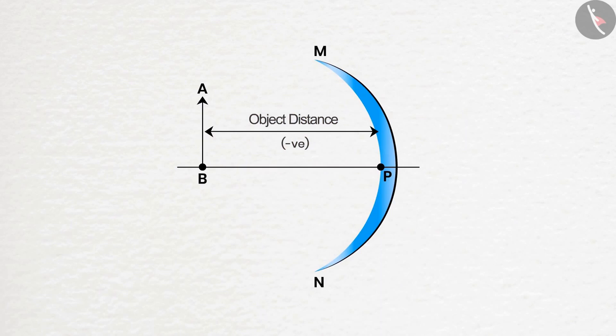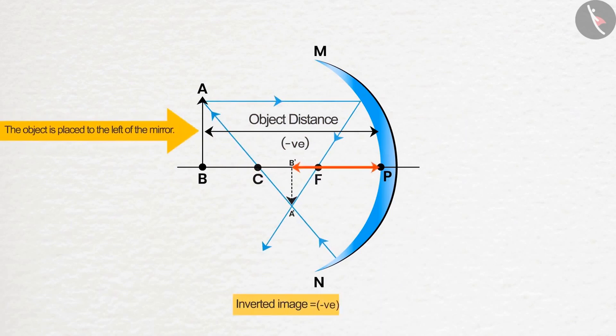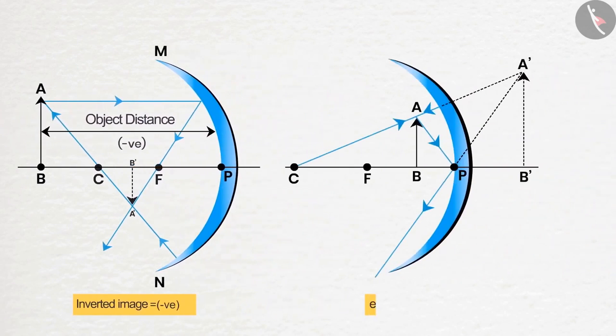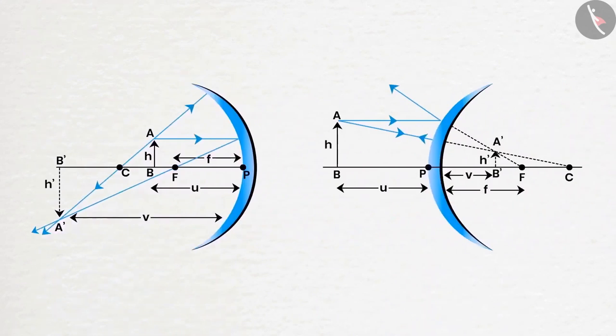spherical mirrors; only the new Cartesian sign convention needs to be taken care of. The object distance will always be negative as the object is placed to the left of the mirror. The distance of a real image is taken as negative and the distance of a virtual image is taken as positive. We see that sometimes the image is larger than